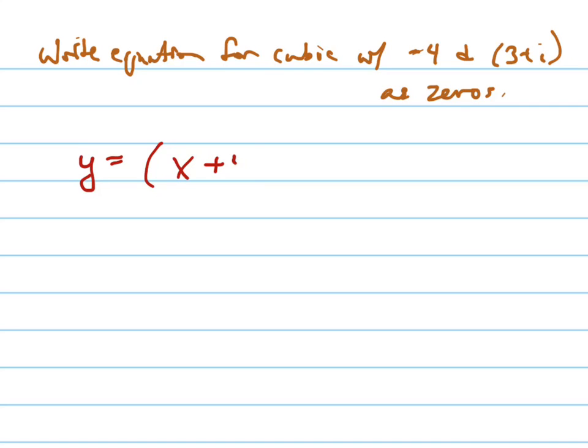It's x plus 4, because if negative 4 is a zero, that means x equals negative 4, which means x minus 4 equals 0, and there's your factor.